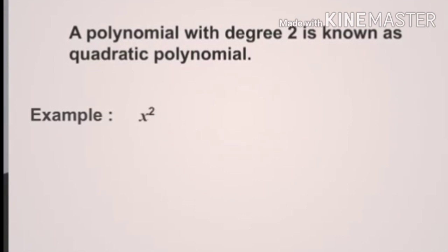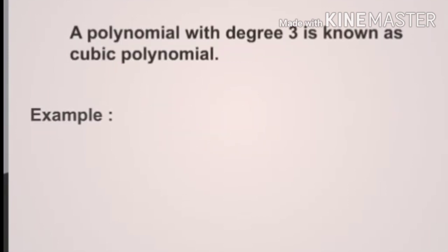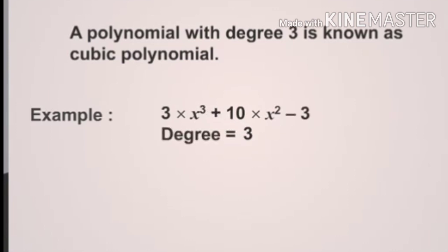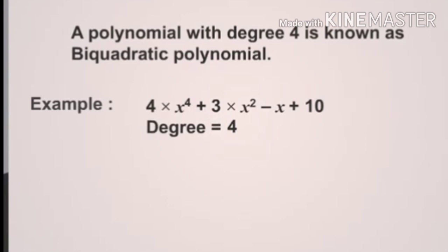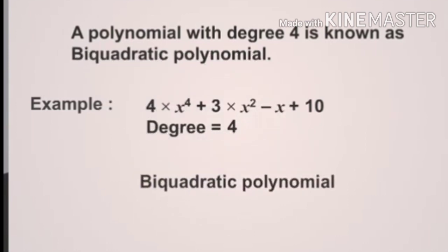Example a: x² + 12x − 3. Degree is equal to 2, so the polynomial is quadratic. Example a: 3x³ + 10x² − 3. Degree is equal to 3, so the polynomial is cubic. Example a: 4x⁴ + 3x² − x + 10. Degree is equal to 4, so it is a biquadratic polynomial.